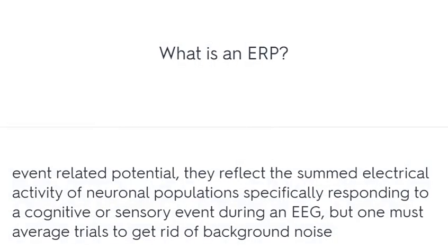What is an ERP? An event-related potential. They reflect the summed electrical activity of neuronal populations specifically responding to a cognitive or sensory event during an EEG. One must average trials to get rid of background noise.